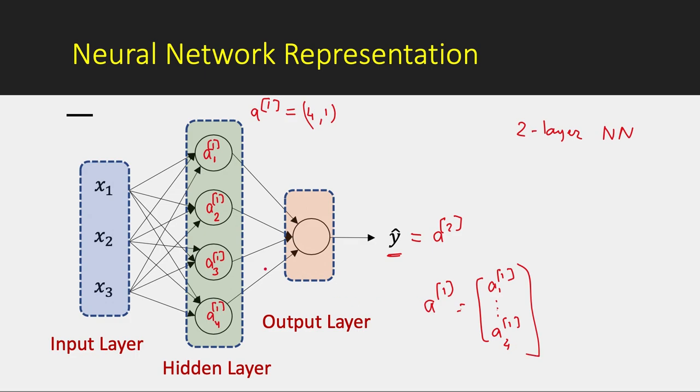So this is the activation of first layer. And here we called it capital X vector, the inputs. So we can also call it a^(0), activation of layer zero. So in that way you can see it as a three layer if you call it layer zero.